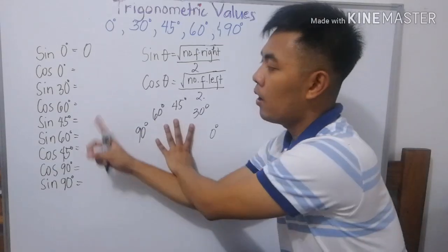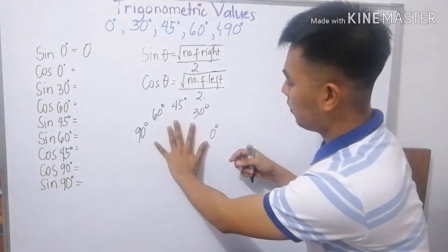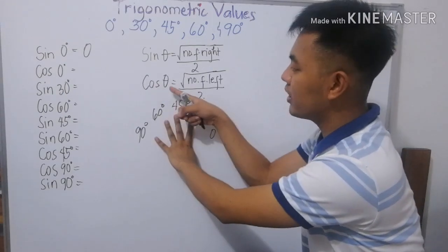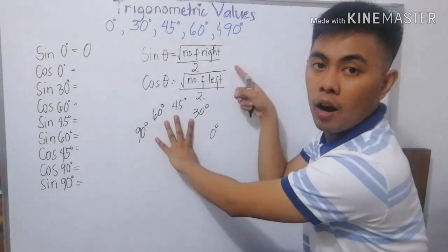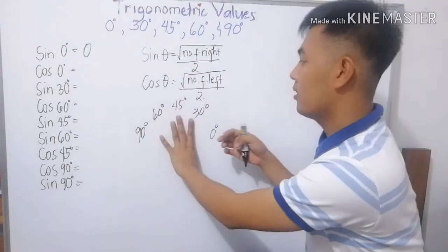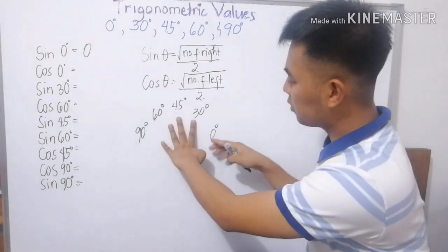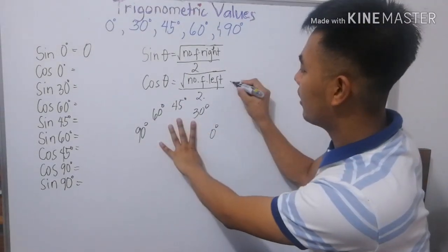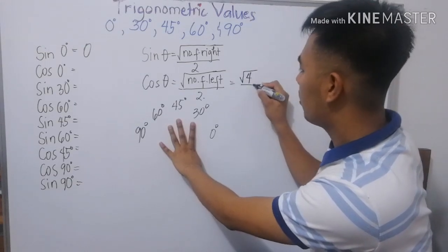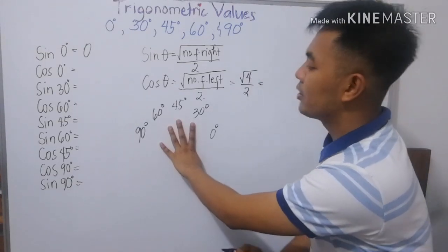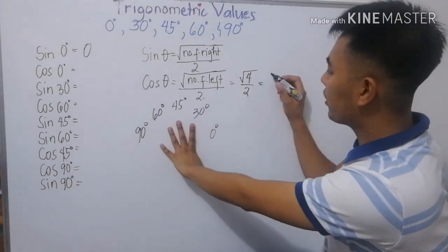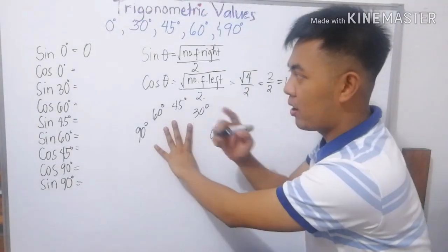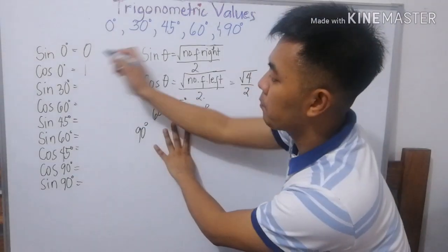Next, cosine 0. So, cosine 0, yung degree natin ay 0. Ibig sabihin tupiin natin yung 0. Ang cosine theta ay square root of number of fingers na nasa sa kaliwa, divided by 2. So, kung 0 ka, tupiin natin, ilan yung daliring na naiwan sa kaliwa? 4. So, square root of 4 over 2. Square root of 4 is 2 over 2. The answer is 1. So, ang cosine 0 ay 1.